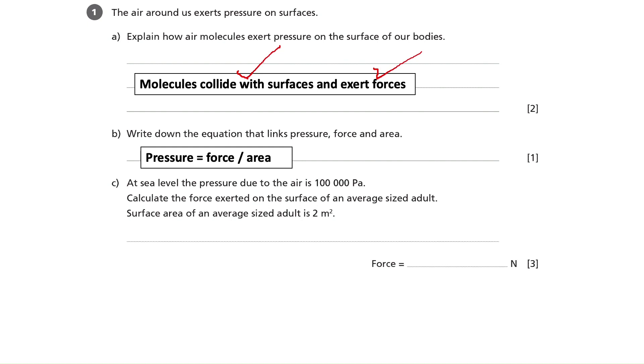Okay, so what we need to do here is rearrange the equation that we've written down for part B. So, what we'll do is, we'll say that's 100,000 equals F over 2. So, that's force divided by 2. The 2 is the area, as we can see here. So, by rearranging that equation, we get F equals 2 times 100,000, which is 200,000.